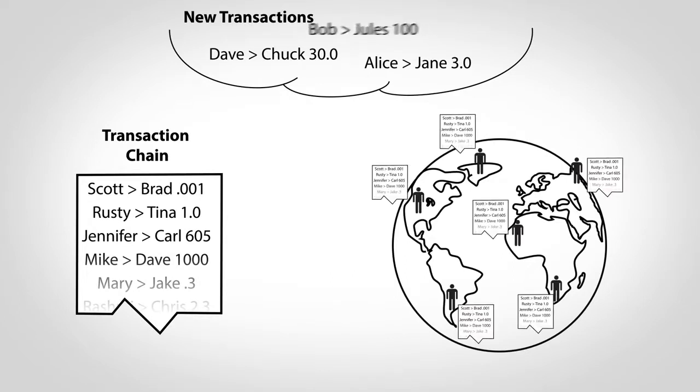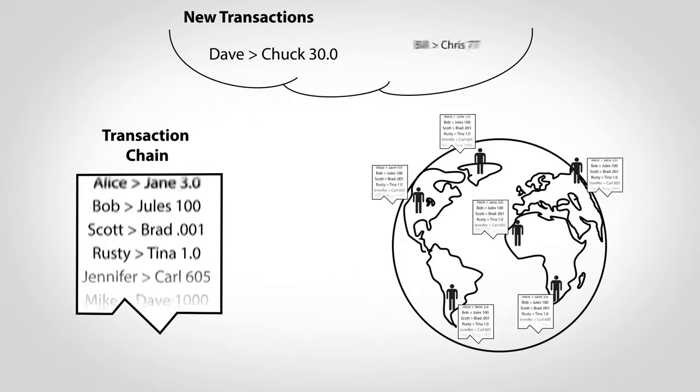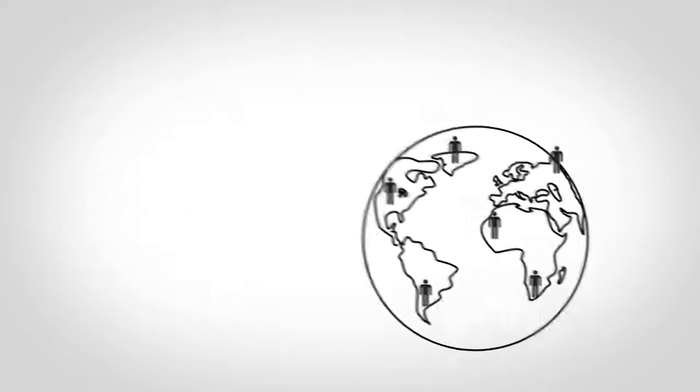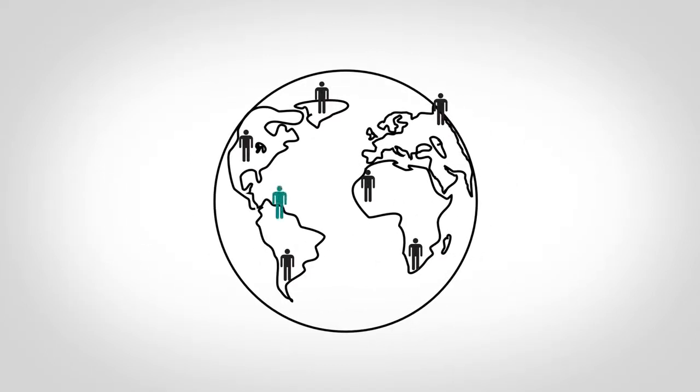So the lottery provides a way for the entire world to decide which transaction is next, but the math behind it also helps ensure everyone agrees about past transactions too. Suppose you're joining the network for the first time and request a copy of the transaction chain to get caught up but receive several different versions, which one should you trust?